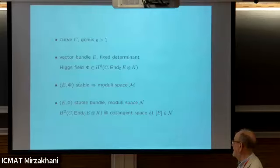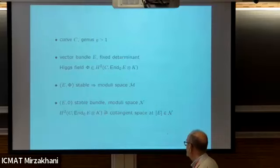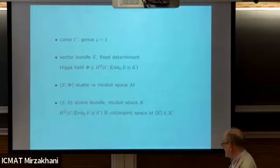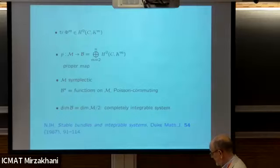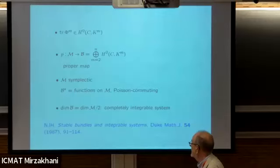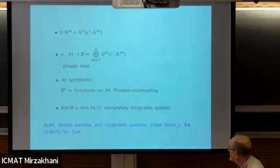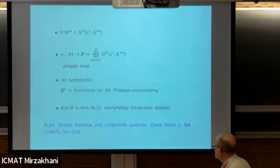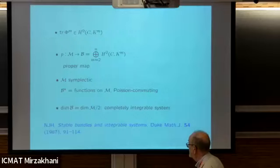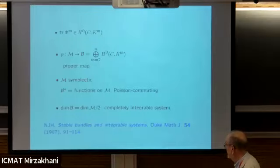At a point on this moduli space of stable bundles, we can understand the space of Higgs fields as being the cotangent space at the point given by E on the moduli space of stable bundles. The integrable system, just for the linear group, uses the invariant polynomials - conveniently written as trace of the powers. This gives us a proper map from the moduli space of Higgs bundles to a base, which is the vector space of differentials of degree bigger than one.